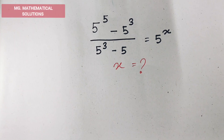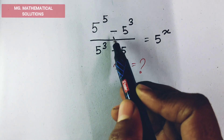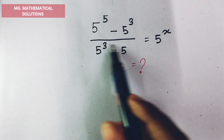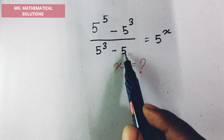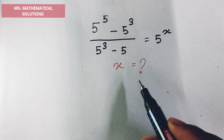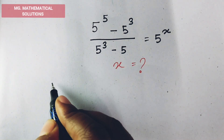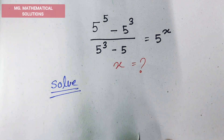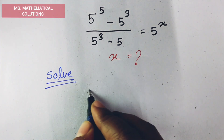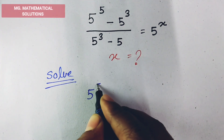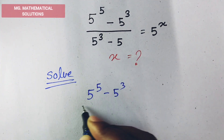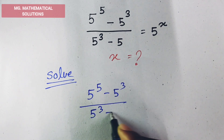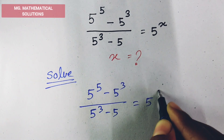Hi students, today's question is a nice exponential problem which is: 5 to the power 5 minus 5 cube, divided by 5 cube minus 5, equal to 5 to the power x. Let's see how to solve. 5 to the power 5 minus 5 cube by 5 cube minus 5 equal to 5 to the power x.